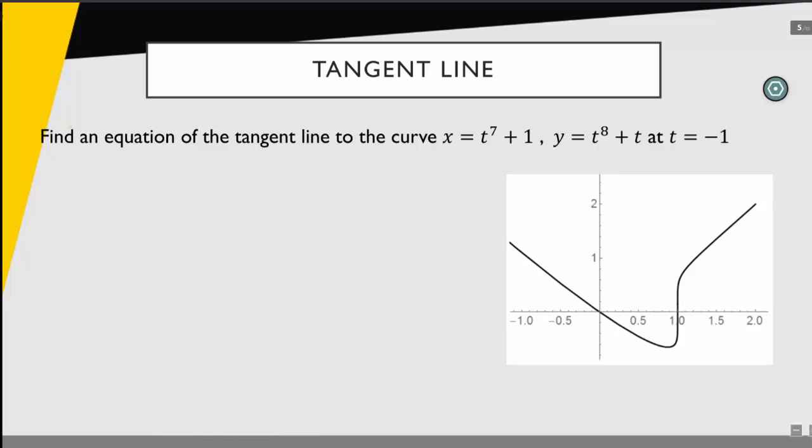Okay, so we have a couple equations for a line. We have y equals mx plus b. Now maybe more useful in this case is going to be our point-slope form of the line, which is just y minus y sub-naught equals m times x minus x sub-naught.